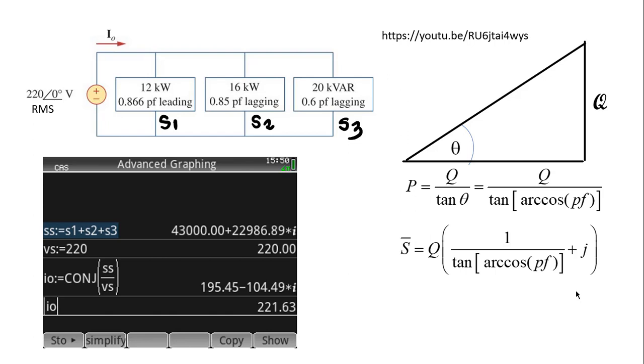The source is 220 volts rms 0 degrees. The current will be given by a formula we have seen before: the complex conjugate of the ratio of the complex power in the source divided by the voltage in the source. That is the current I naught. Its absolute value is the rms value of the current, 221.63 amperes. And that is the solution to the first part of this question.